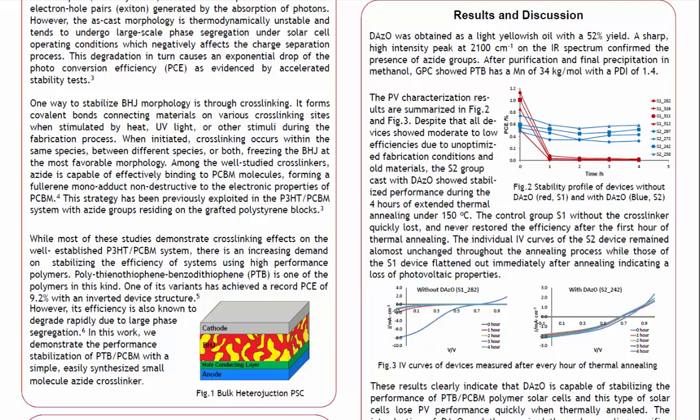The PV characterization results are summarized in Figure 2 and Figure 3. All devices show moderate to low efficiencies due to unoptimized fabrication conditions and old materials. The S2 group cast with diazidooctane showed stabilized performance during four hours of extended thermal annealing at 150°C. The control group S1 without the crosslinker quickly lost and never restored the efficiency after the first hour of thermal annealing. The individual IV curves of S2 devices remained almost unchanged throughout the annealing process, while those of the S1 devices flattened out immediately, indicating a loss of photovoltaic properties.